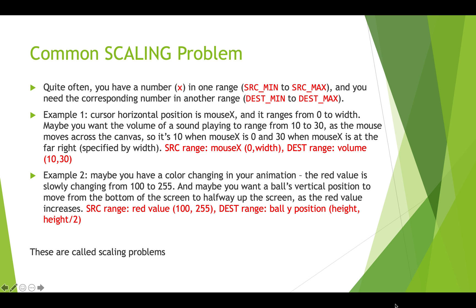Here's another example. Maybe you have color changing in your animation — the red value is slowly going from 100 to 255. And maybe you want a ball's vertical position to move from the bottom of the screen to halfway up the screen as the red value increases. So the source range is the red value from 100 to 255, and the destination range is the ball's Y position from height to height divided by 2. These are scaling problems and we need to do some math to solve them.